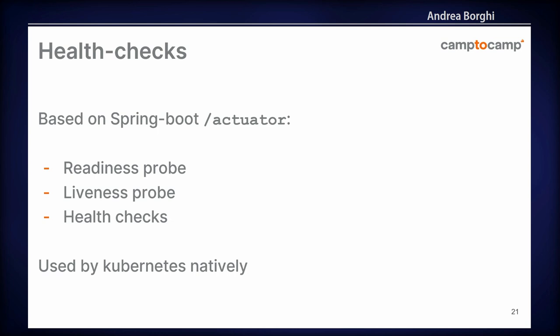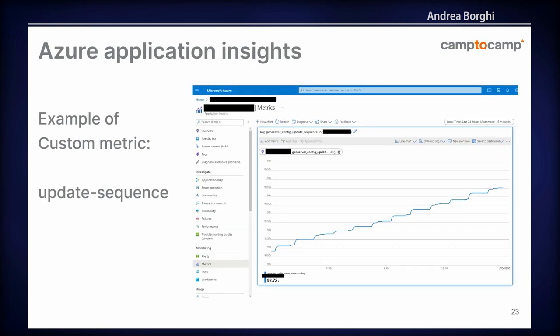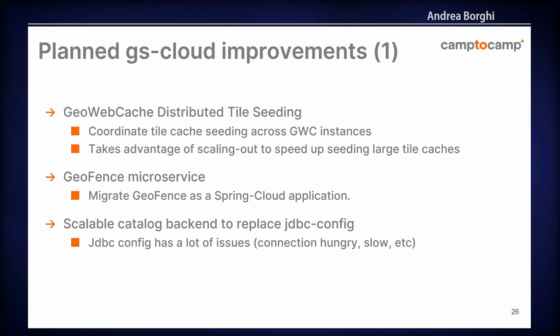This is natively working, with no effort. We have also used application metrics. The Micrometer library has been part of Spring Boot since version 2 and it's a very interesting library to add any kind of custom metrics to your application. For example, I show here an example — the update sequence. I'm one minute less. This is an example of one custom metric that is exported. And just to speak about the development this year: we have migrated to Java 17, there is a GeoWebCache integration, and we have new extensions that came this year — GeoWebCache, Mapbox style, and auth key authentication — and several vulnerability checks.